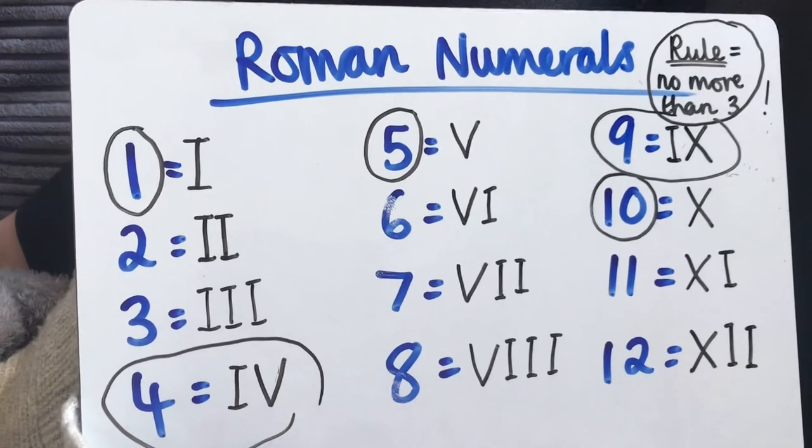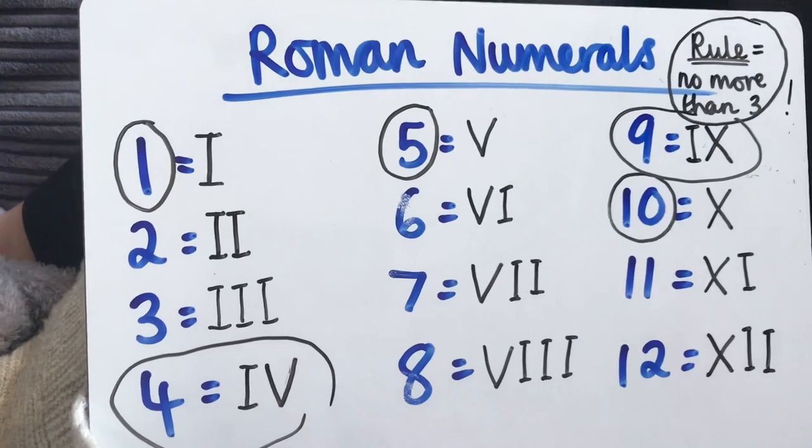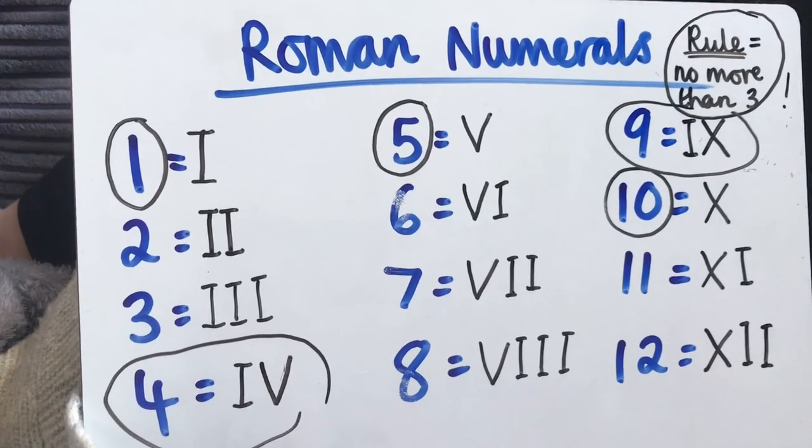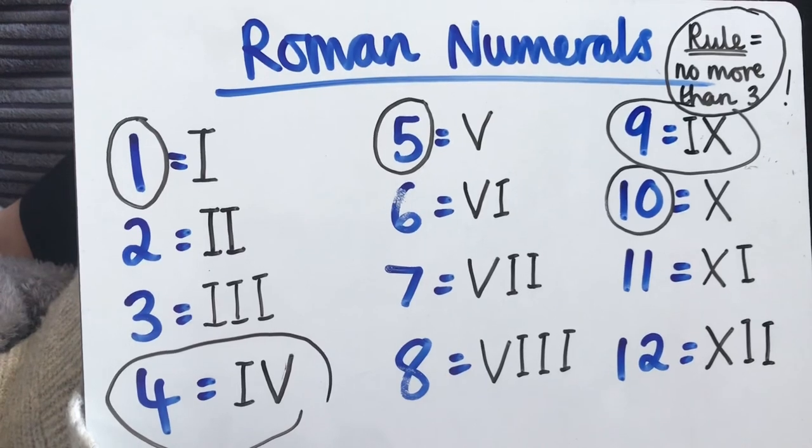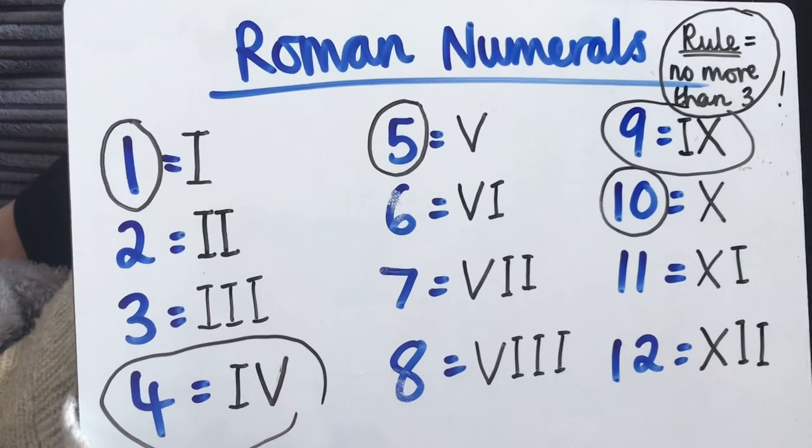Have a go at the worksheets. Watch this video again if you found it a bit tricky. Keep practicing Year 3, and next time we're going to have a go at practicing learning to tell the time on an analog clock using Roman numerals.